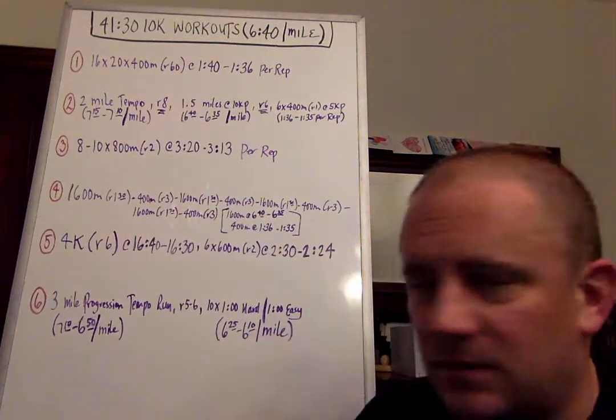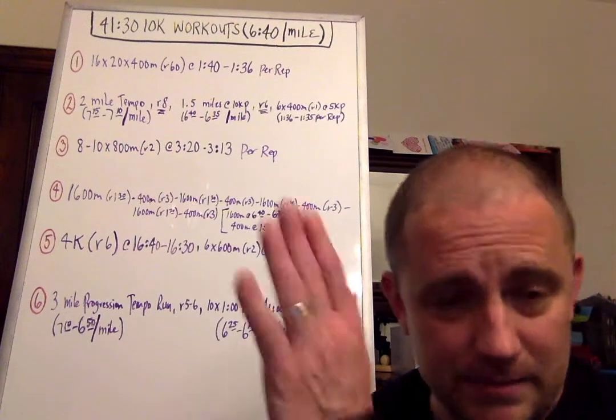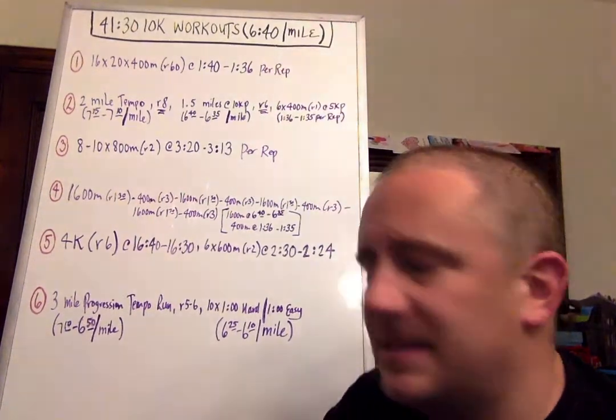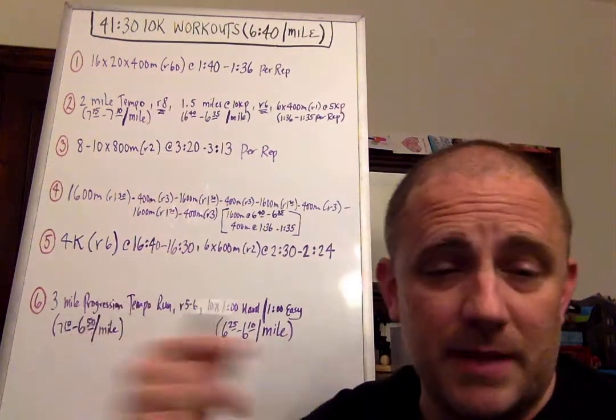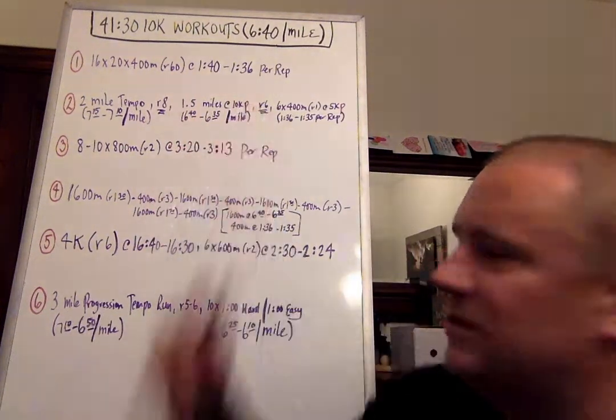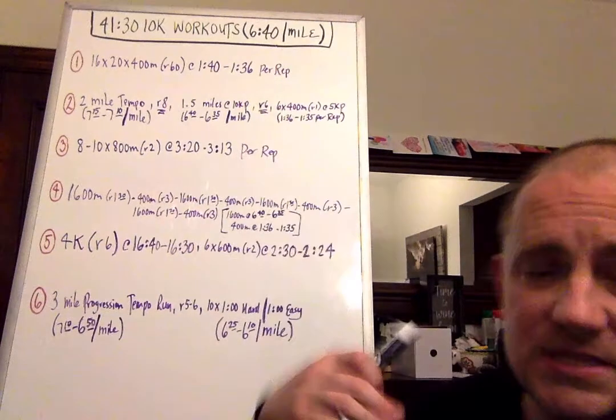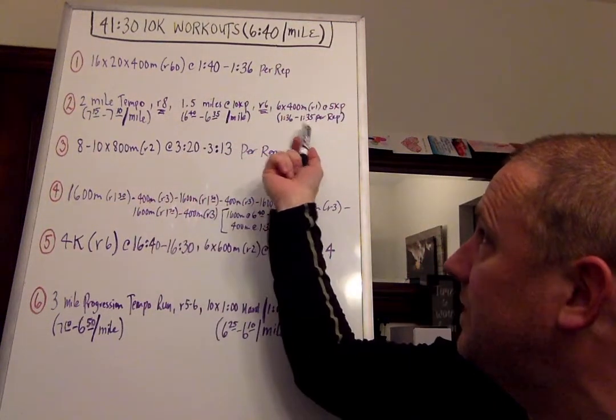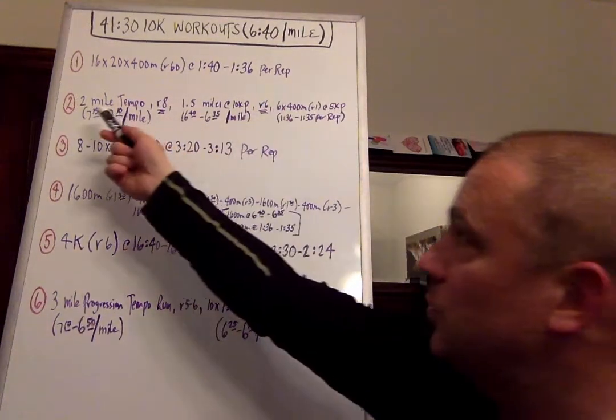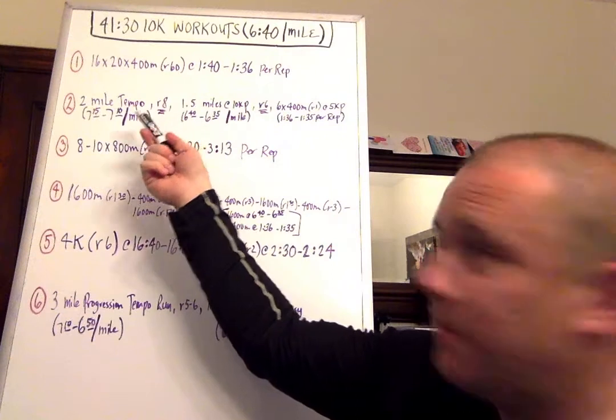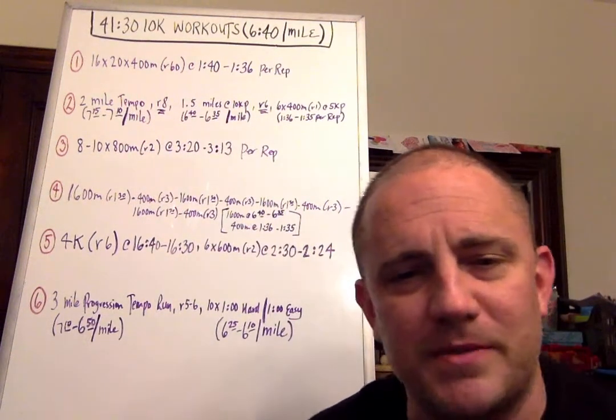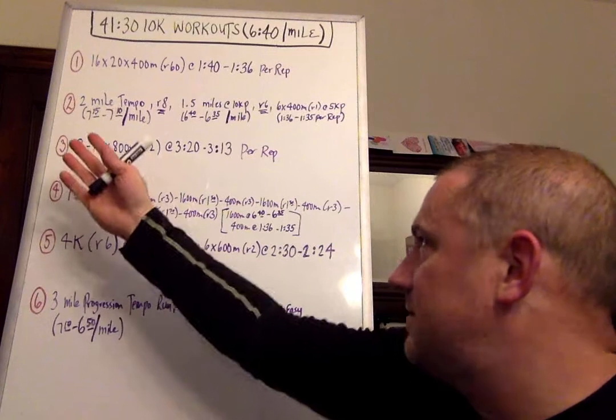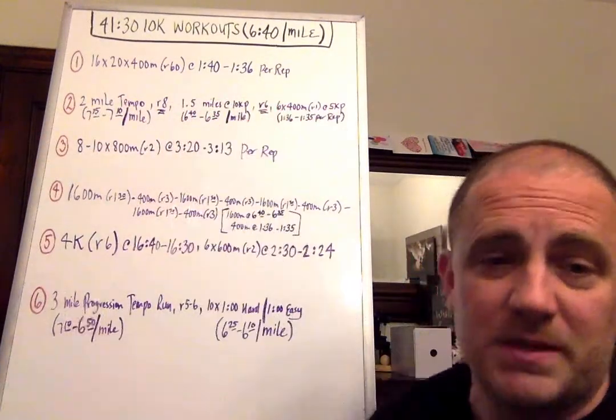Which in this case, early season, it'll help you maximize the benefit of the entire workout. So after an eight-minute active recovery, you stay loose, you get some fluids if you need to. You do 1.5 miles at 10-kilometer pace, which is 6:40 to 6:35 per mile. Race pace. And ideally, over time, you can build this towards two miles, and then even some cases more than that. So you do that, and then you take a six-minute active recovery. And then on the back end, you do six times 400-meter efforts with a one-minute recovery at 5K pace. Current 5K pace, so 1:36 to 1:35 per rep.